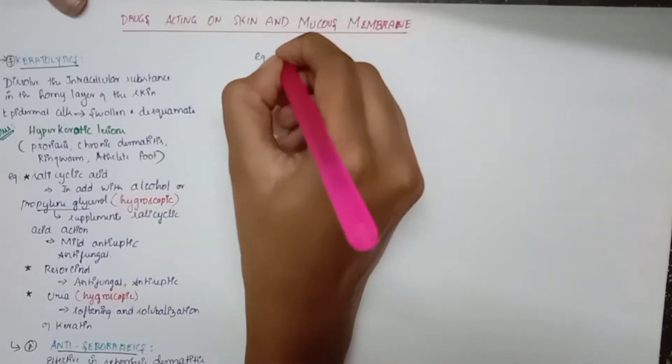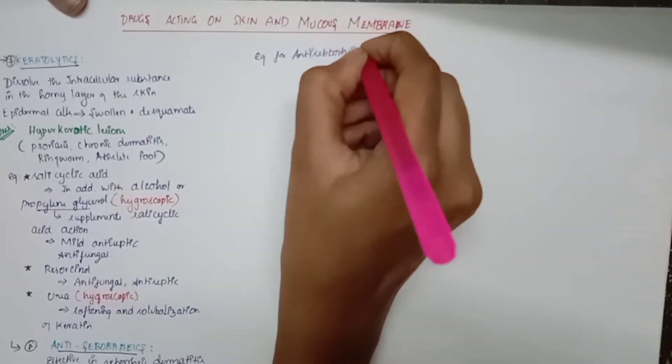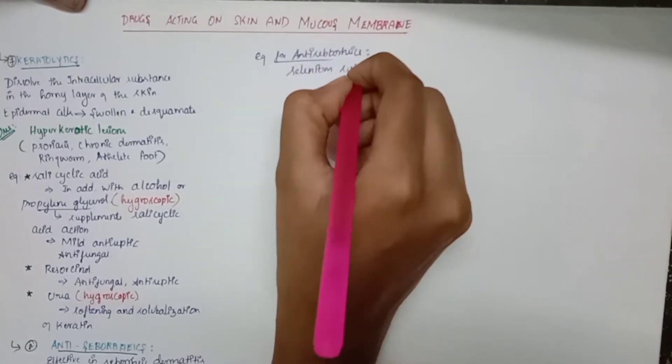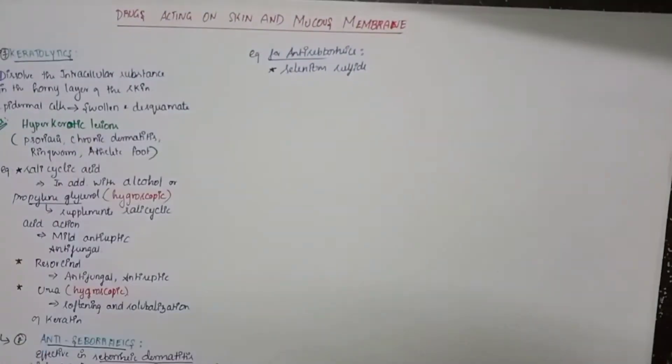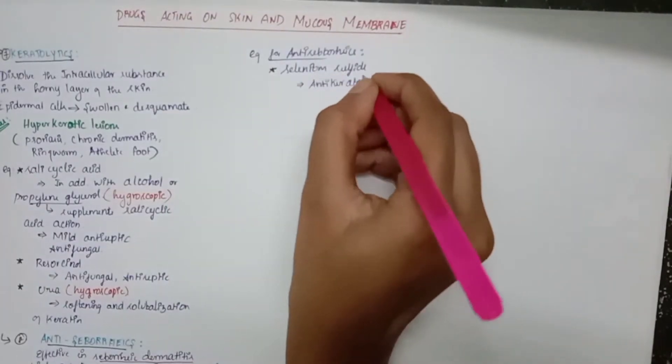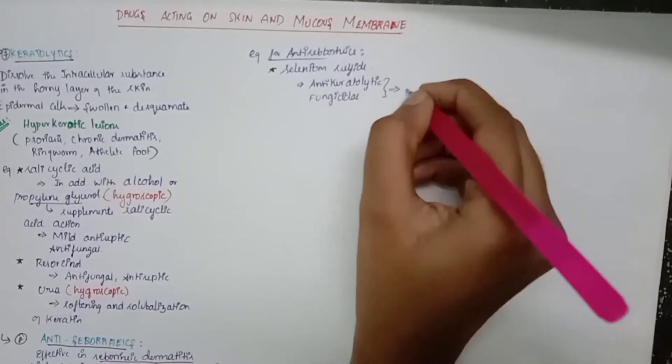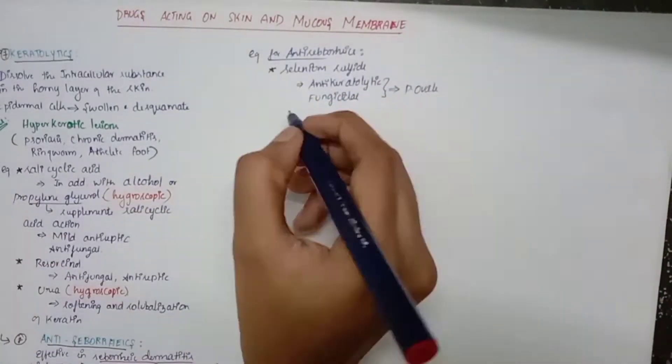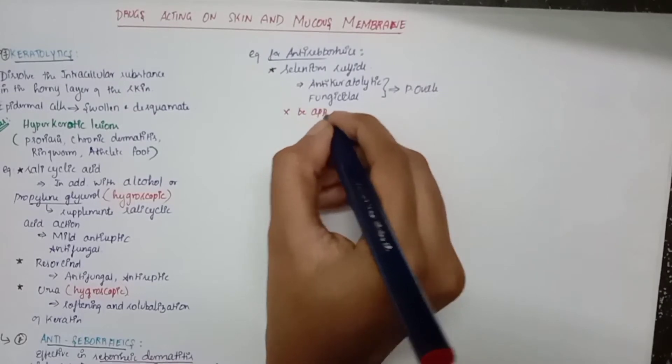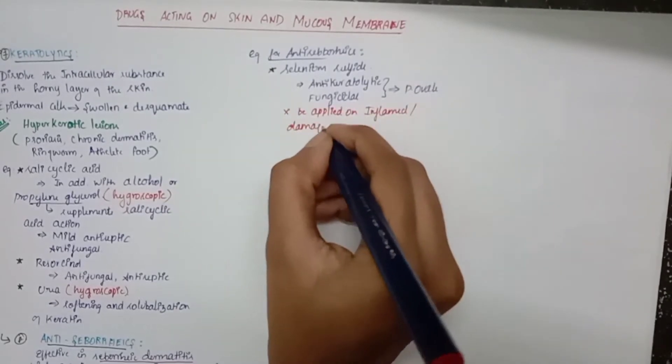The trigger factors are increased sweating, emotional stress, and genetical problems. Examples of antiseptic drugs are selenium sulfide. The actions are anti-keratolitic and fungicidal to pterosporum ovale, the yeast. And it should not be applied on inflamed or damaged skin, otherwise it will cause adverse effects.